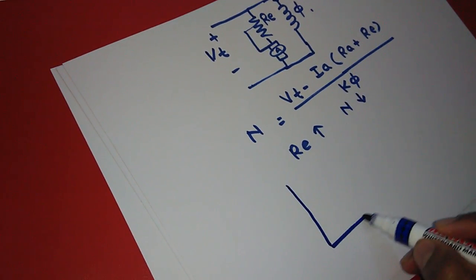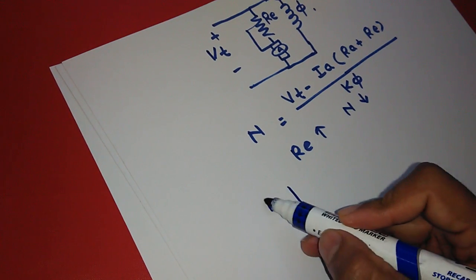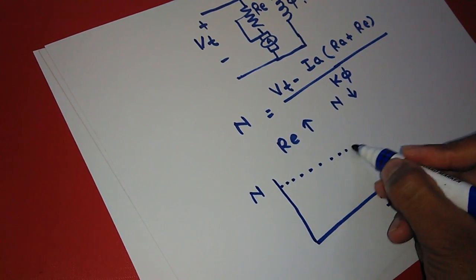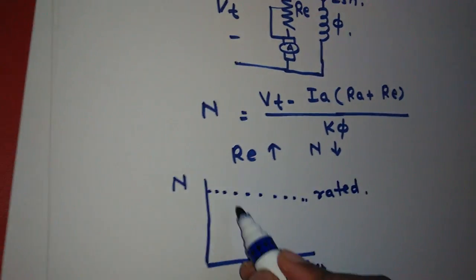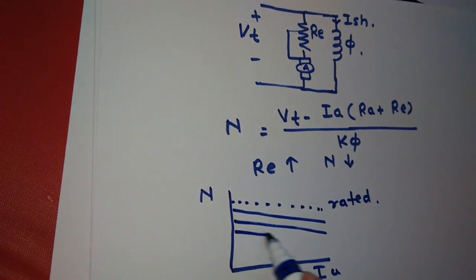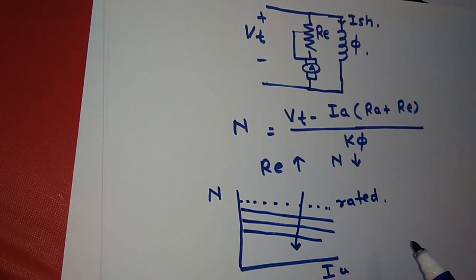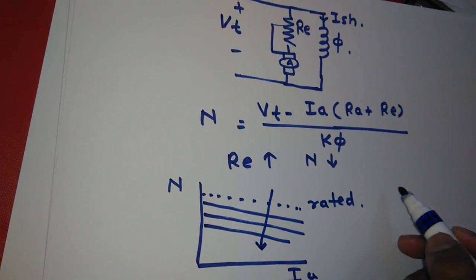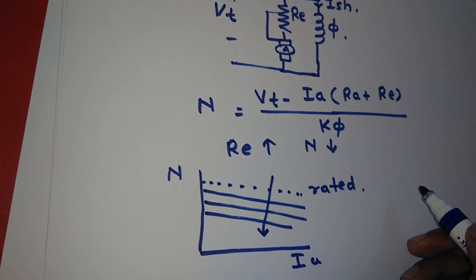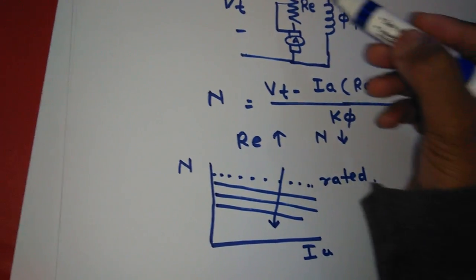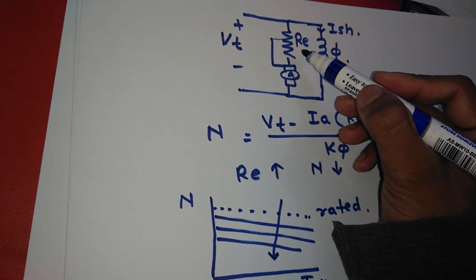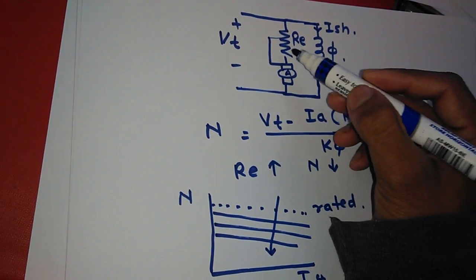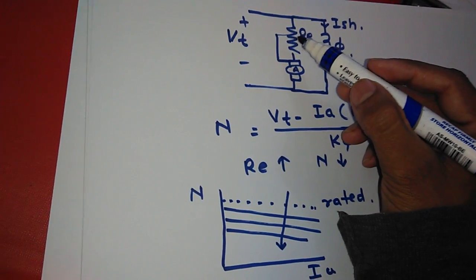If we see the characteristic of speed versus current, we can see that this is the rated speed and speed control is achieved below the rated speed. By this method we can change the speed below the rated speed. It has some problems, which is why it is not used widely. The problem is that whatever external resistance is connected, it causes power loss, so there is too much power loss in the armature connection.